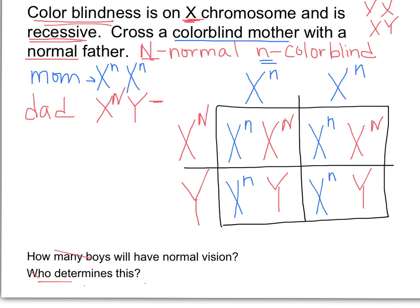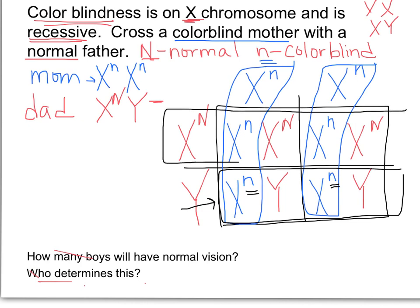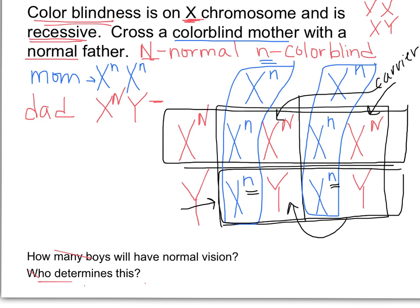Everything that comes from mom is highlighted here. The boys are boys because of the Y from their dad, and their inability to see color comes from their mom. These girls can thank their dad because they can see color, but because of their mom, these girls are carriers. So I have two carrier girls and two colorblind boys — 0% of the boys are going to be able to see color. It comes from mom — mom can't see color, so none of her sons can see color. The mom in this case is determining whether you can see color or not.